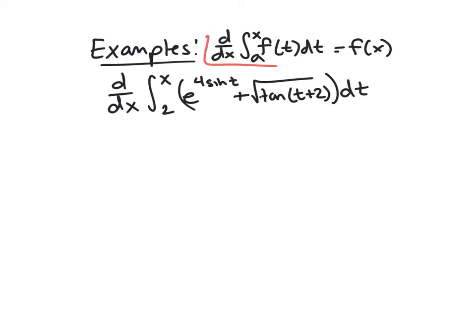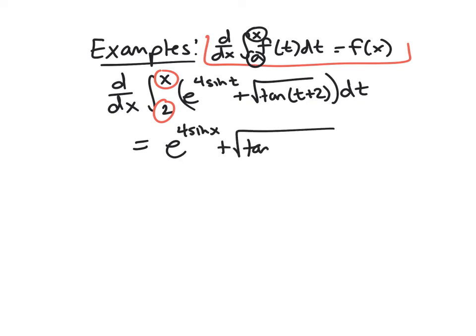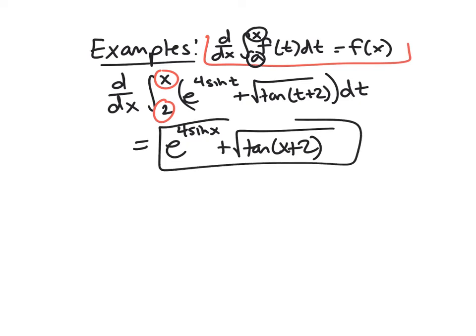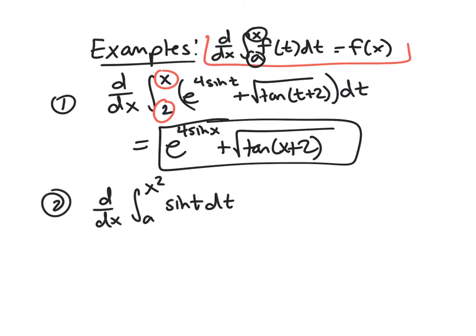With the FTC at the top as reference, let's look at examples. This first one involves a nasty integral we don't know how to evaluate directly, but the theorem makes finding the derivative easy. We have a to x, so we simply plug in x for t: the derivative is e^(4·sin x) + √(tan x + 2). The theorem is super powerful — we get this for free without much work.